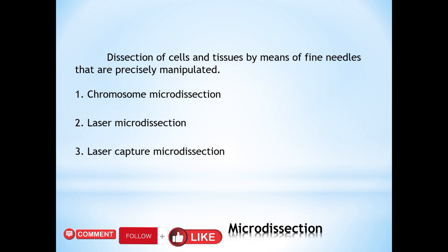There are three different techniques used in micro dissection. The first is chromosome micro dissection: cutting of chromosomes or parts of a chromosome from the whole chromosome by using a specific needle under the microscope. The second technique is laser micro dissection, where selected organelles or structures within cells are cut under the microscope using a laser.